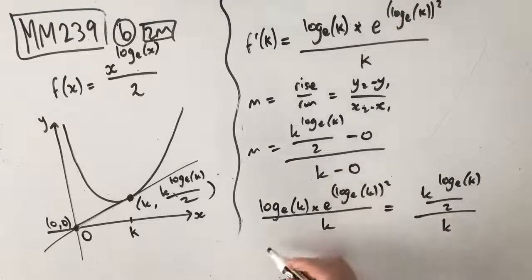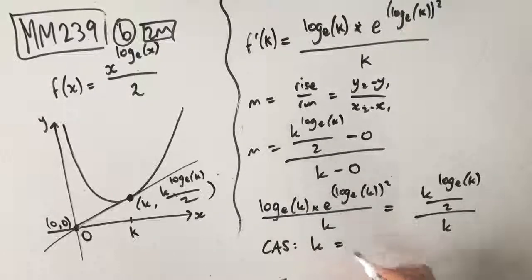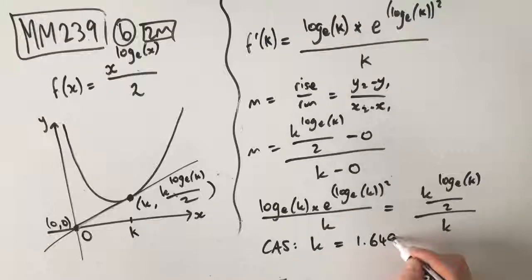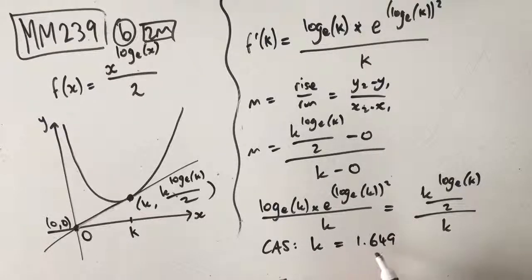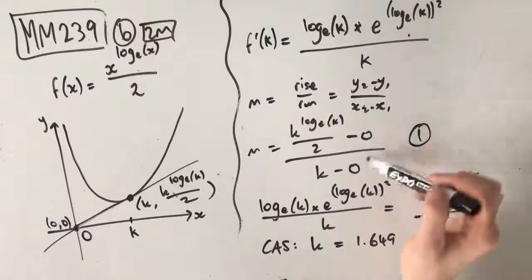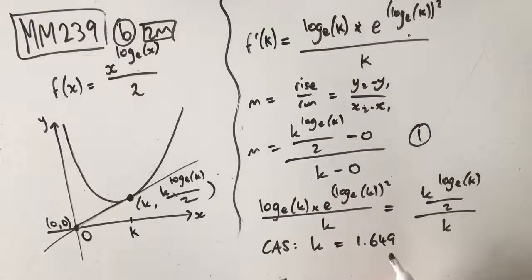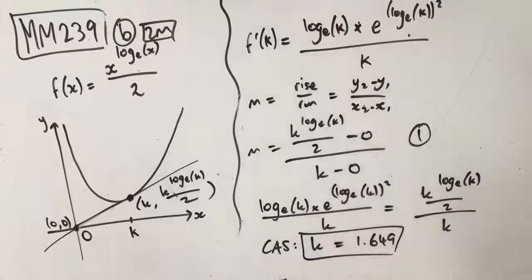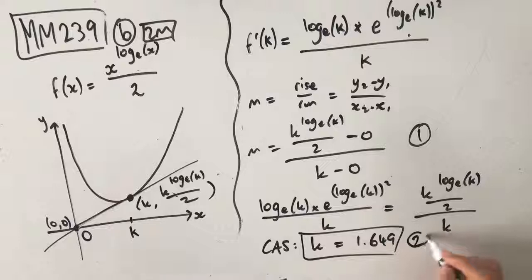All we need to do now is solve in CAS, and k is equal to 1.649 — that's three decimal places. Your first mark comes from recognizing these two gradients, and your second mark comes when you equate those gradients and find k equals 1.649.